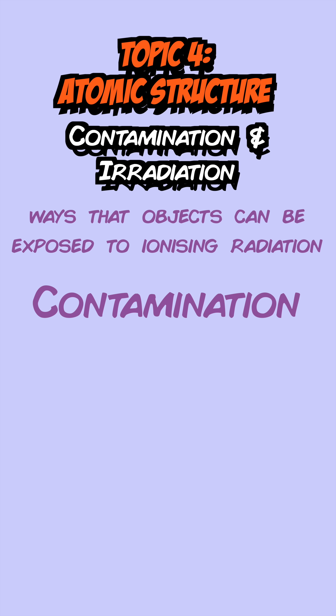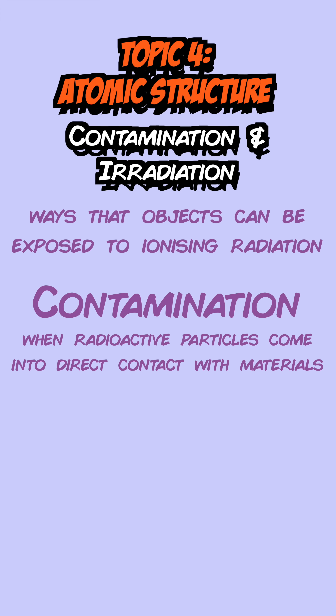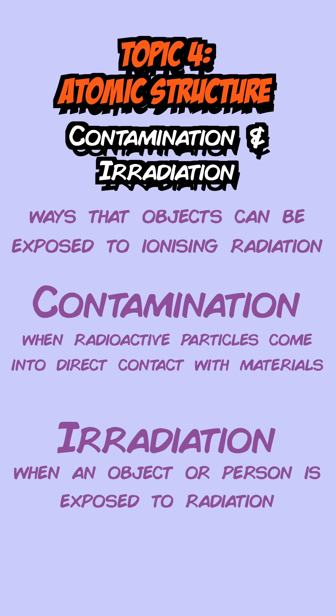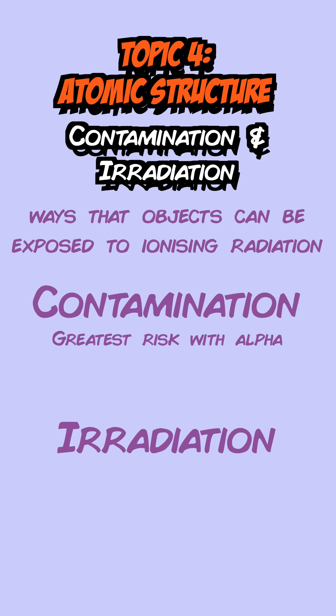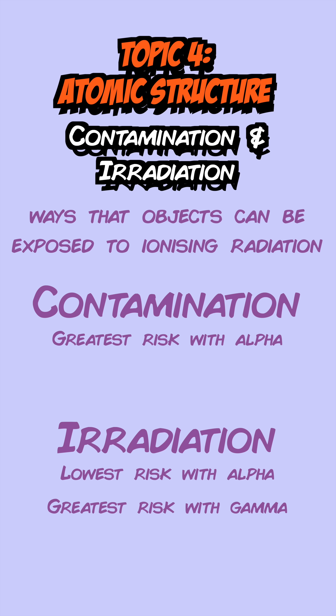Finally, contamination and irradiation are two different ways objects can be exposed to ionising radiation. Contamination is when a radioactive particle comes into direct contact with a material or object, whereas irradiation is when an object is exposed to the radiation given off by radioactive particles. Alpha radiation poses the greatest contamination risk because it's the most ionising, but the least irradiation risk as it can't travel far in air. Gamma poses the greatest irradiation risk and the lowest contamination risk.